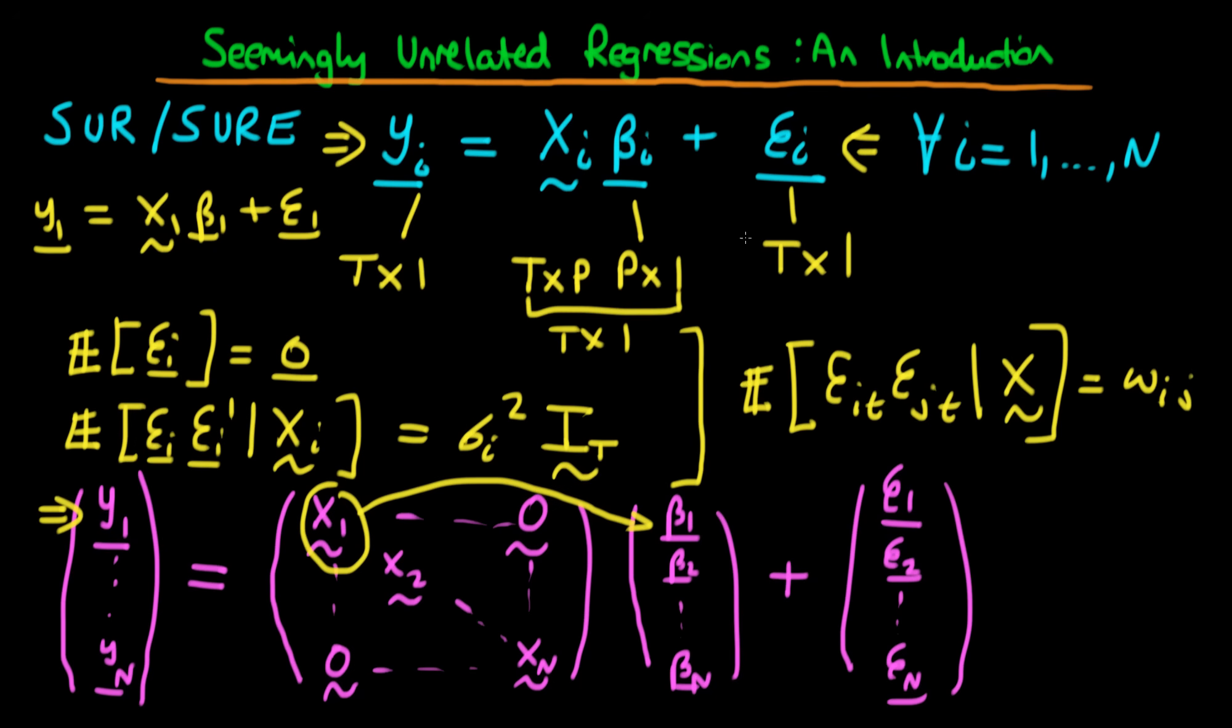That's the important thing here. So the idea is that this left-hand vector now has dimensions N times T by 1. This matrix has dimensions NT by NT. And this parameter vector here has dimensions NT by 1, such that when you multiply these two things together, you get an NT by 1 vector at the end.